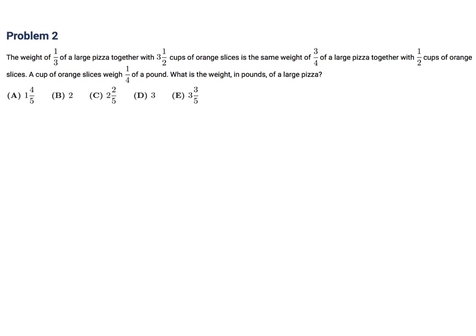The weight of one third of a large pizza, together with three and a half cups of orange slices, is the same as three quarters of a large pizza together with a half cup of orange slices. A cup of orange slices weighs a quarter of a pound. What is the weight in pounds of a large pizza? So if you put that into an equation, it would be P over 3, where P represents the pizza, and 7 over 2 S, where S represents the slices. The other side would be 3 over 4 P plus S over 2.